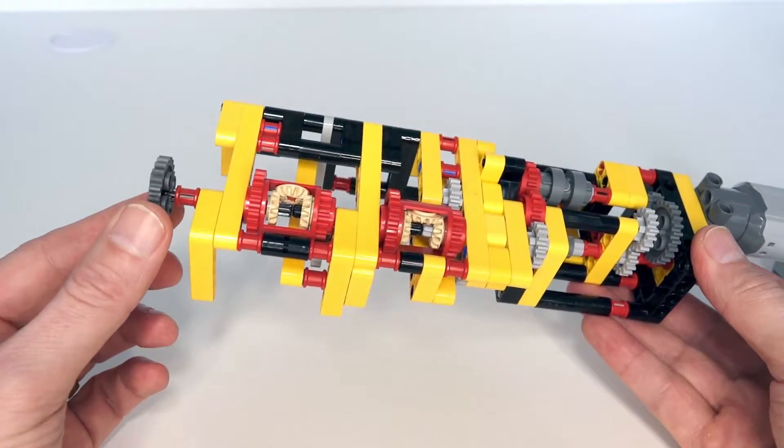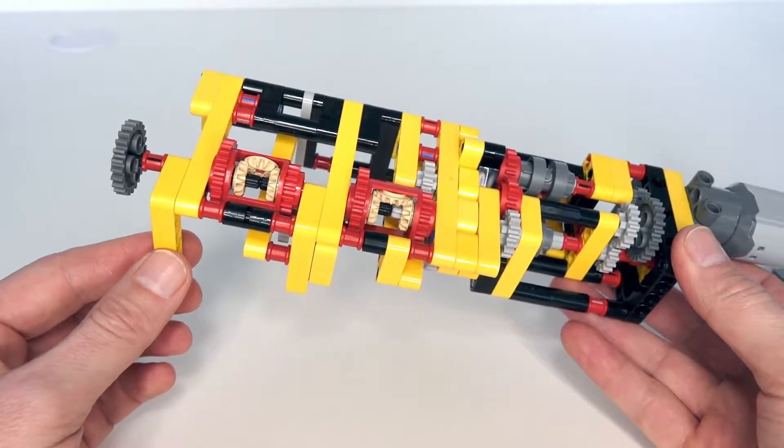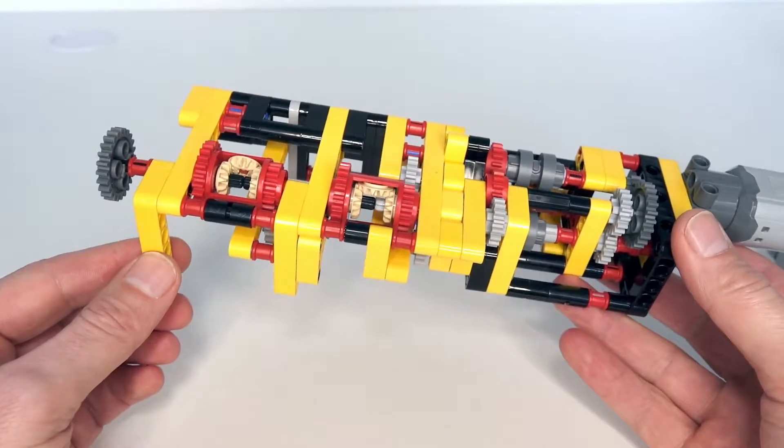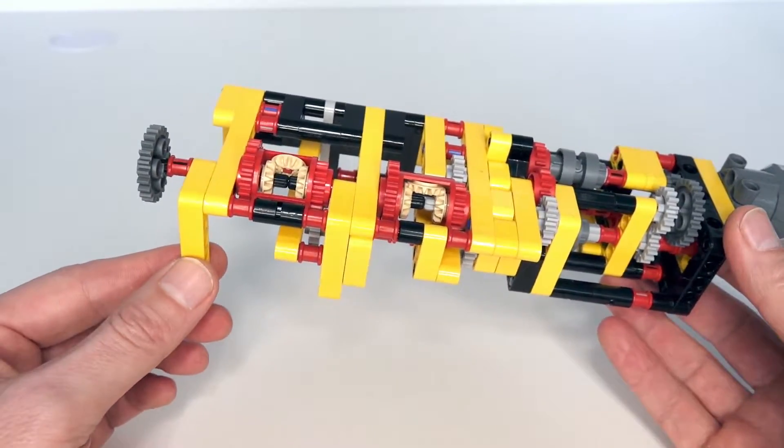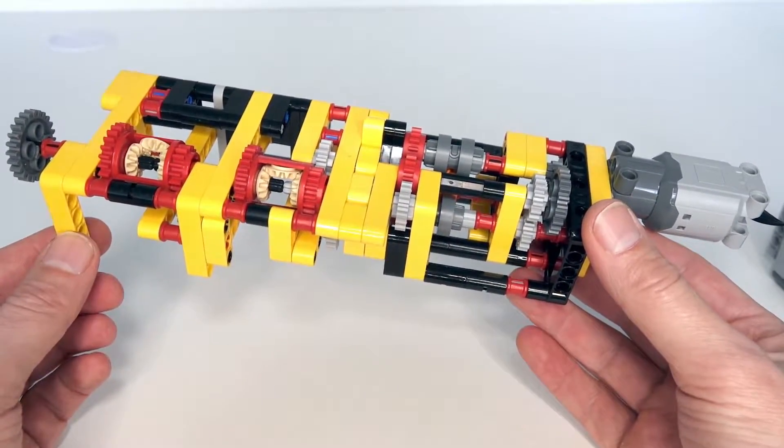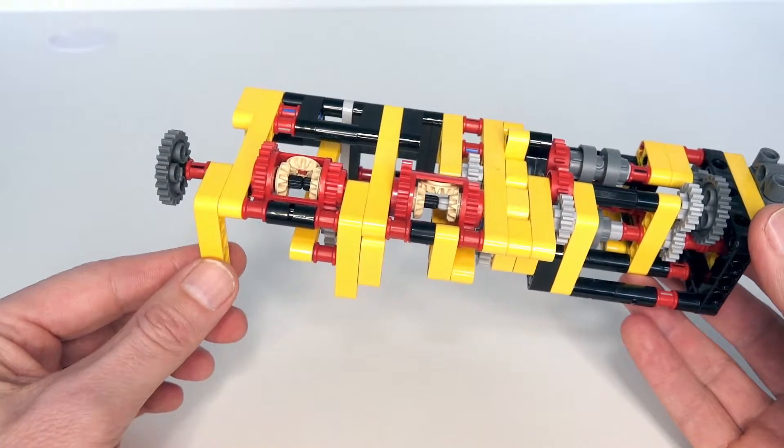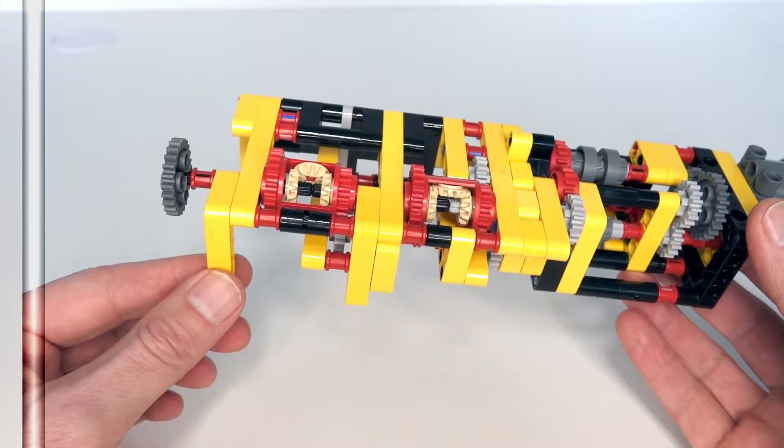The idea of this gearbox is that if there's too much load on the output, it will automatically reverse and go in the other direction. This could be useful, for example, for a car if it hits a barrier. It could automatically reverse and go backwards, avoid that barrier, and go in the other direction.